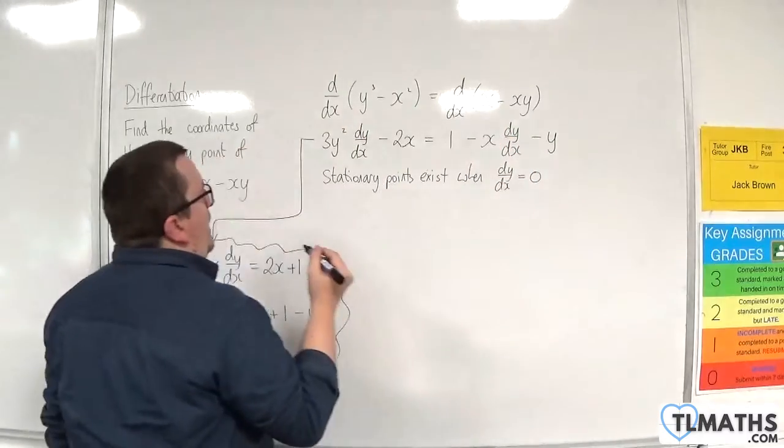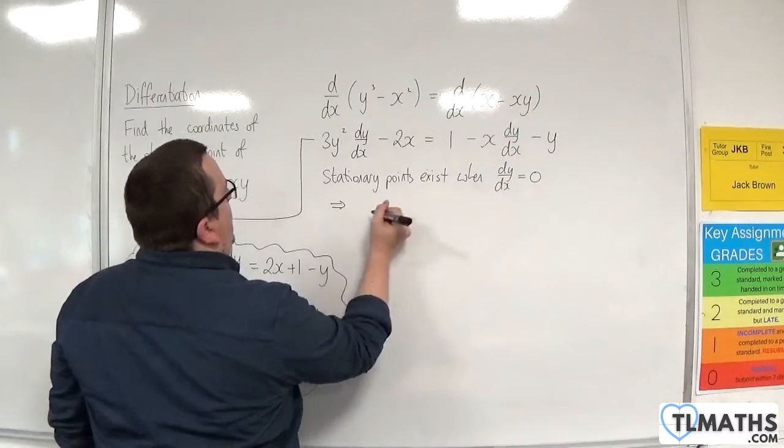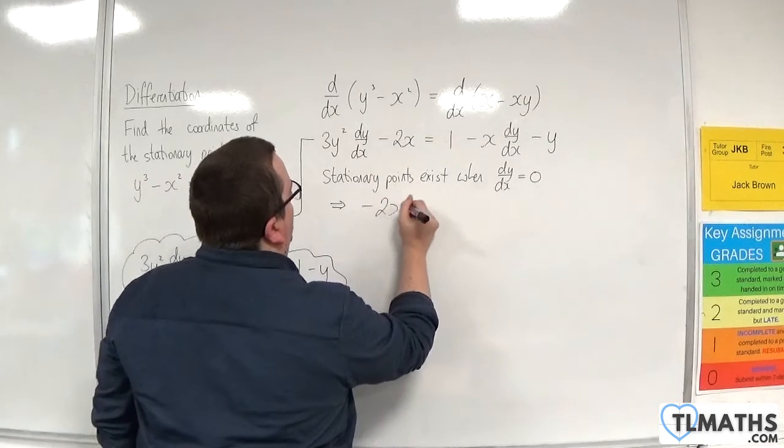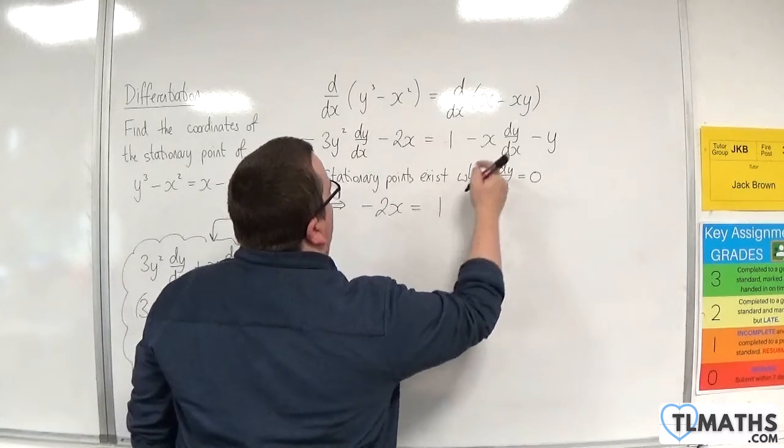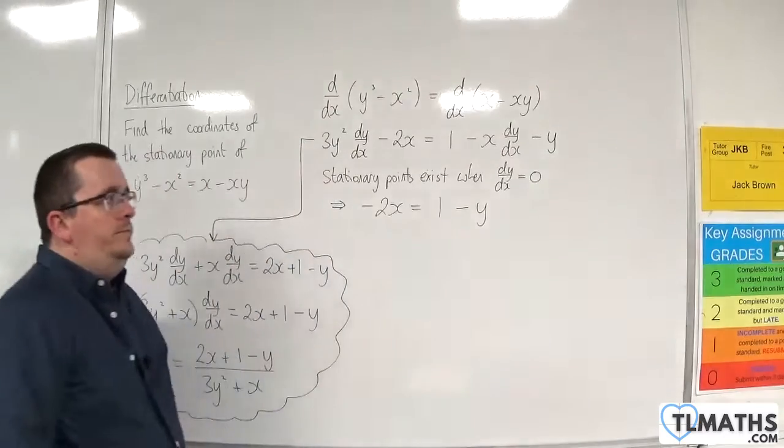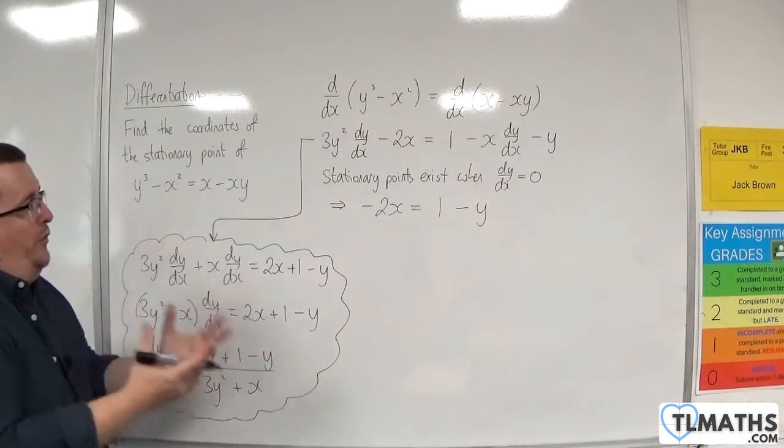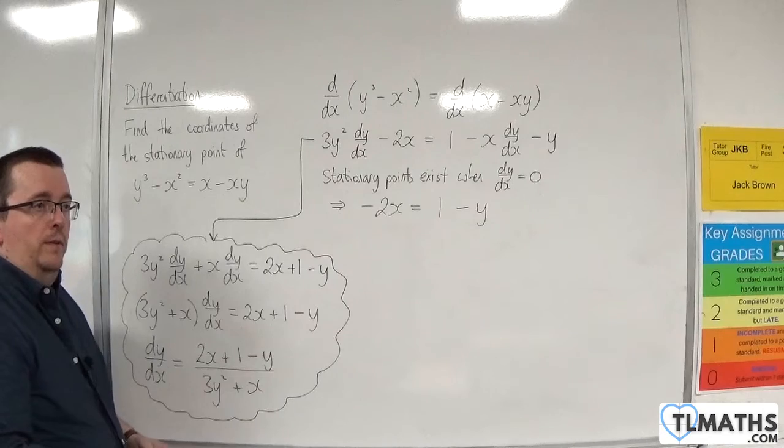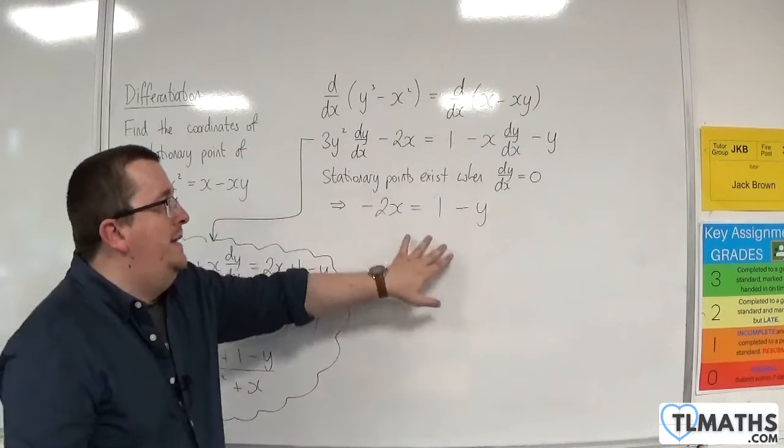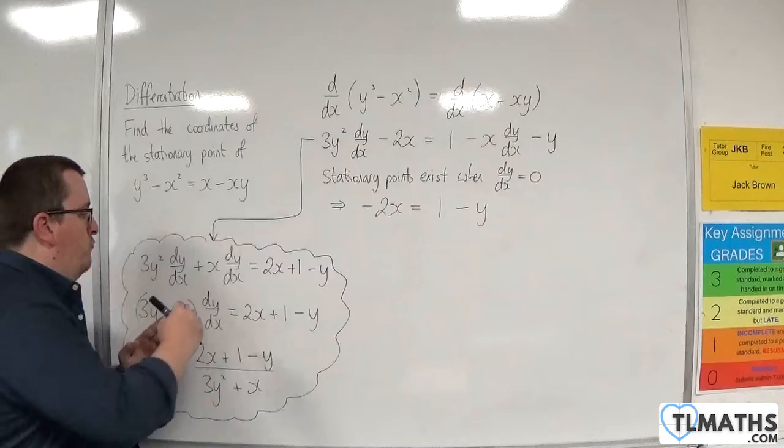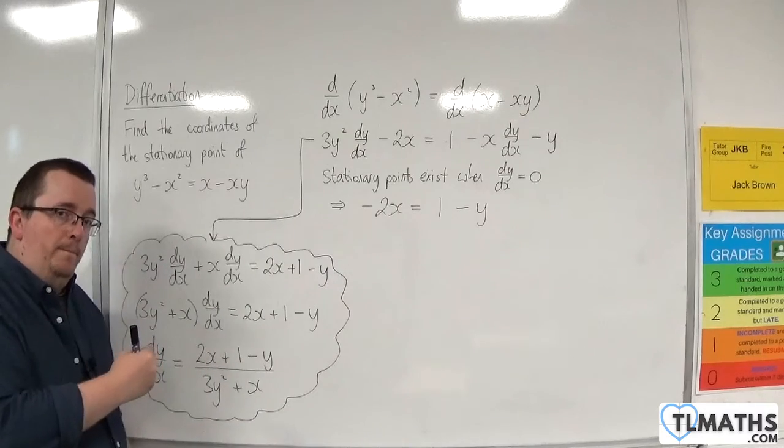And so what that does is that leaves me with 0 - 2x = 1 - 0 - y. And, of course, that is the same as putting the numerator here equal to 0. But if you go straight into that, then that saves you the worry of rearranging this incorrectly.